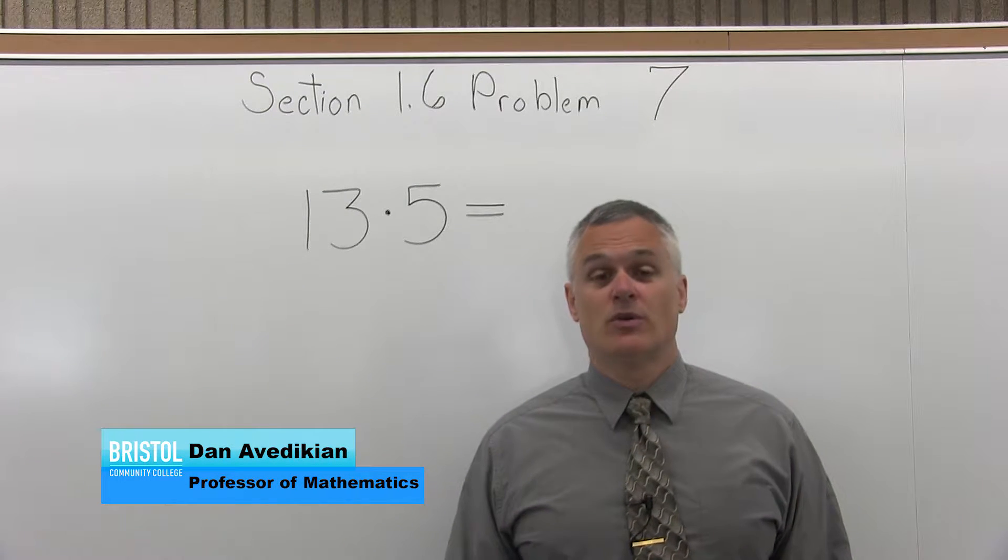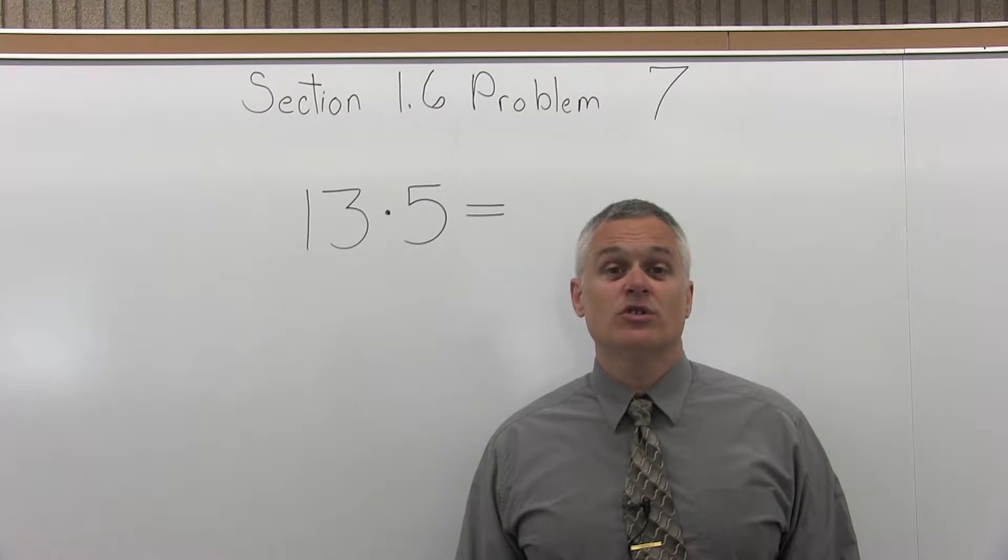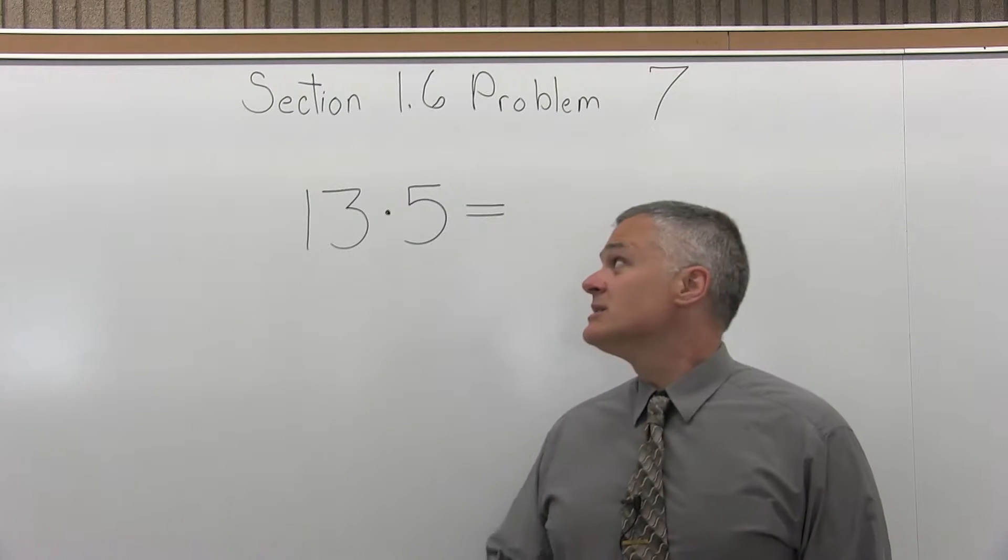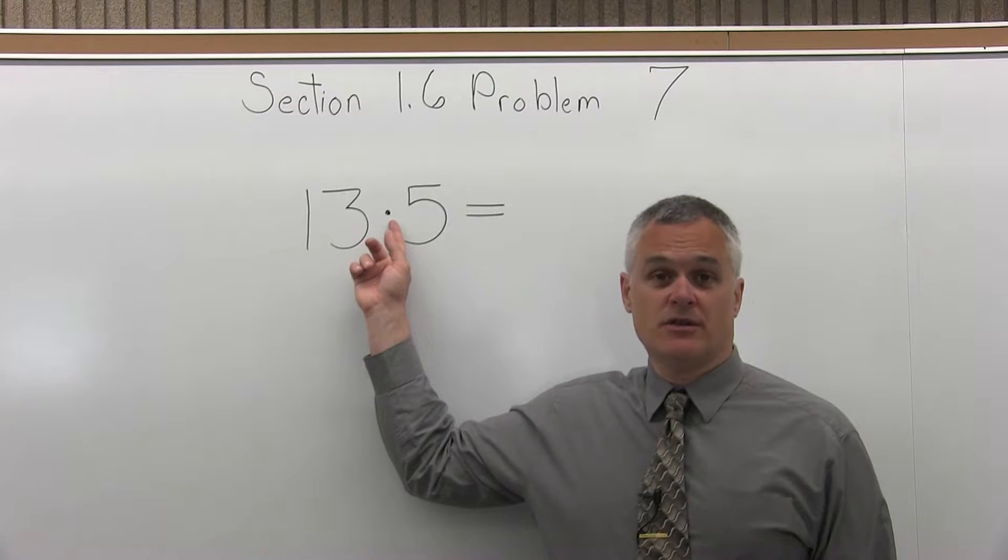This is Section 1.6, Problem 7. We have to do 13 times 5, and as a symbol, they use just a dot to indicate multiplication.